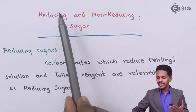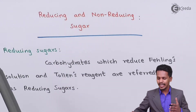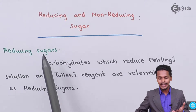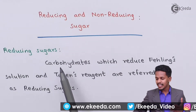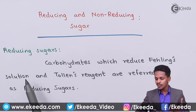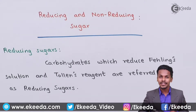Here I am going to talk about reducing and non-reducing sugars. Let me start with the first one — reducing sugars. Carbohydrates which reduce Fehling's solution and Tollens' reagent are referred to as reducing sugars.